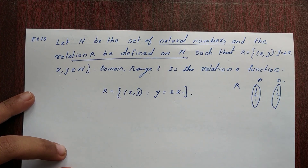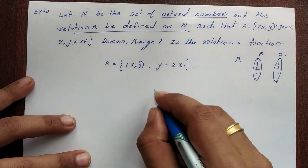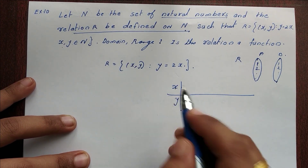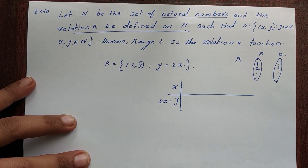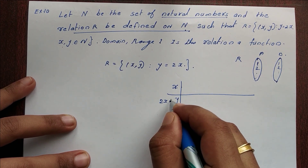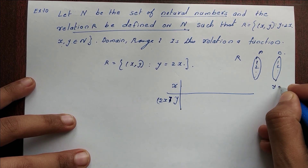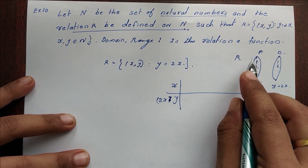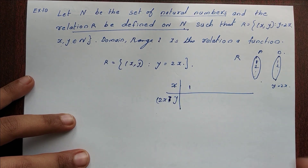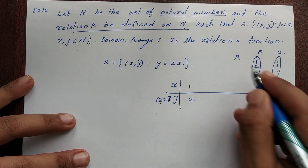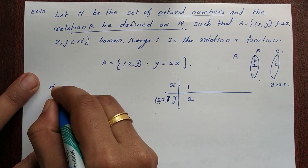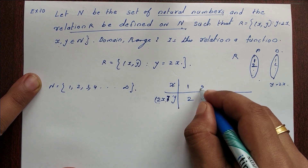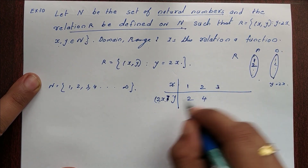Let's find the domain and range. We will list the x and y values. Using y = 2x: when x = 1, y = 2; when x = 2, y = 4; when x = 3, y = 6; when x = 4, y = 8. The natural numbers 1, 2, 3, 4, etc. are infinite.